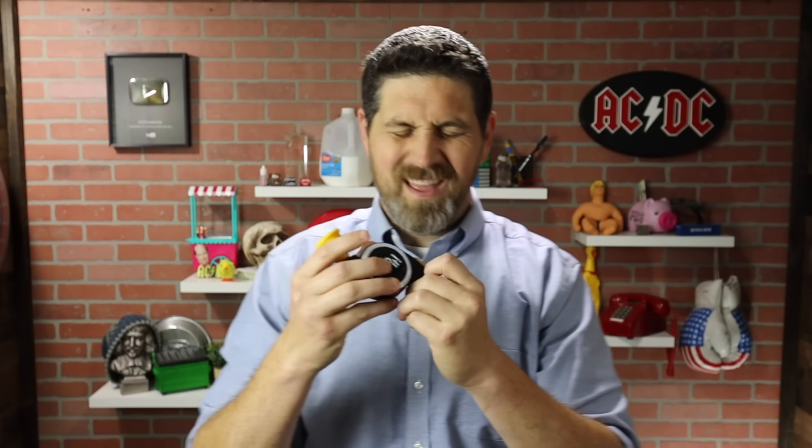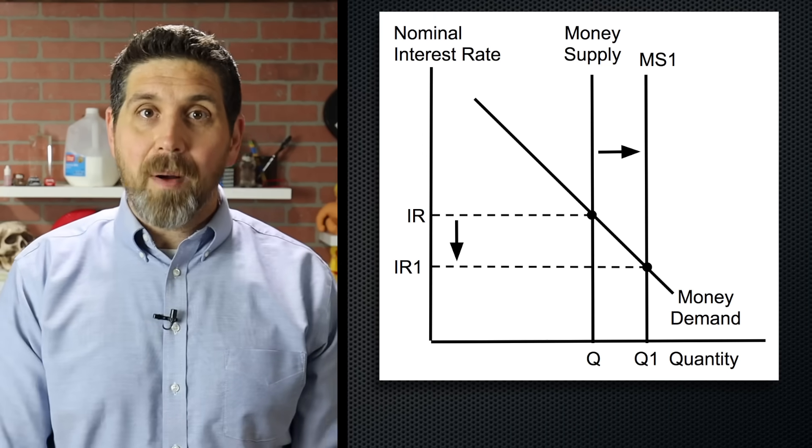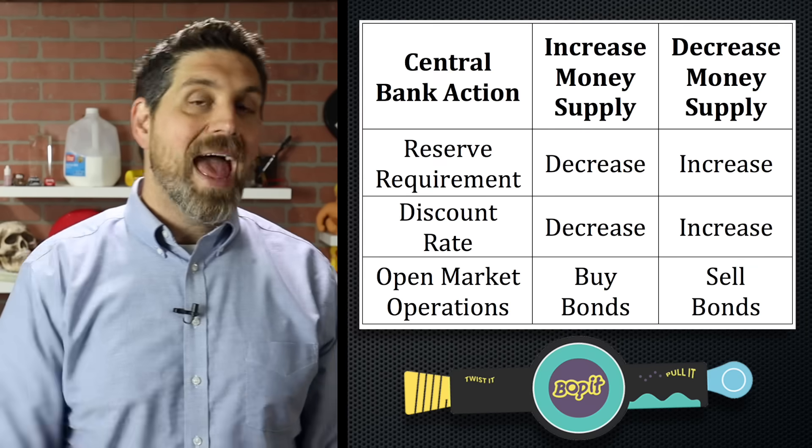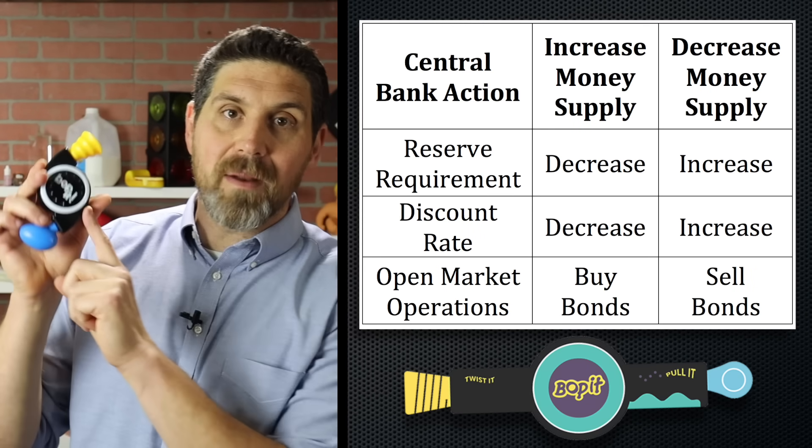Also, in the real world, monetary policy is a whole lot more complicated than you learn in a macroeconomics class. In your class, we assume that banks hold no excess reserves and they loan all the money out and all that money makes its way back in the banking system. In real life, it doesn't look like that. But if you understand that monetary policy is changing the money supply to affect interest rates and there's three ways the central bank changes the money supply, you're gonna be fine. And to help you remember that, I'm gonna add Bop It to my wall.